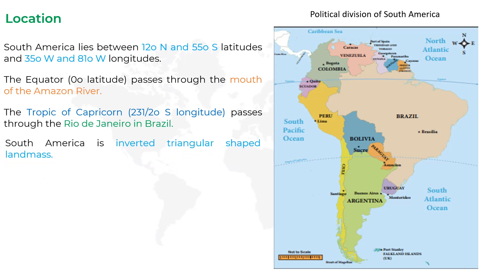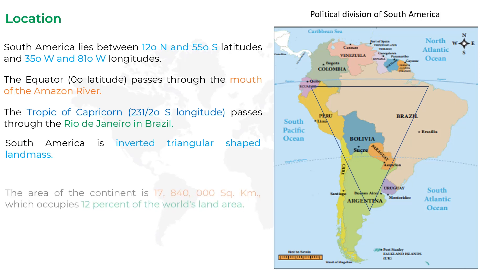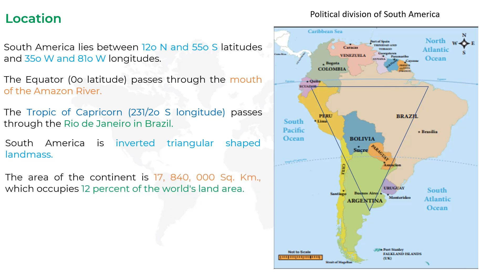The area of the continent is 17,840,000 square kilometers, which occupies 12 percent of the world's land area. So the total area of the South American continent is 17,840,000 square kilometers, and it occupies 12 percent of the world's land area.